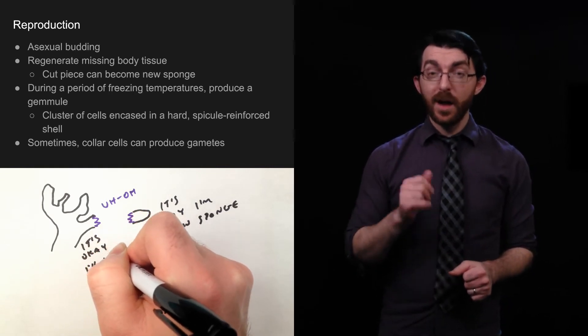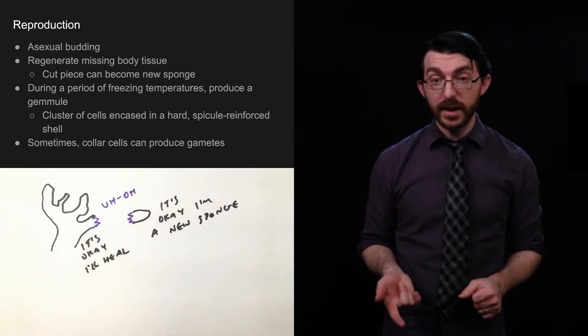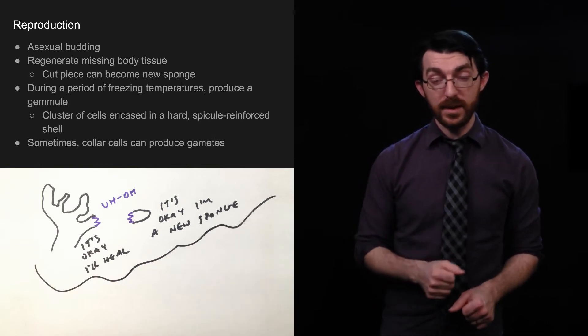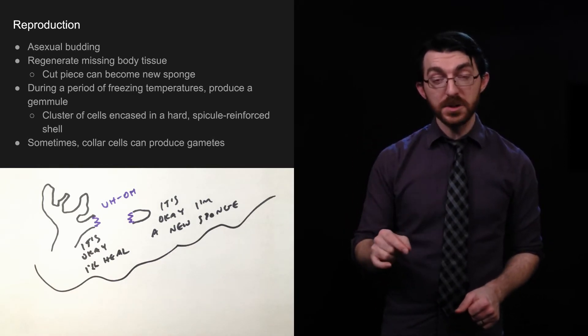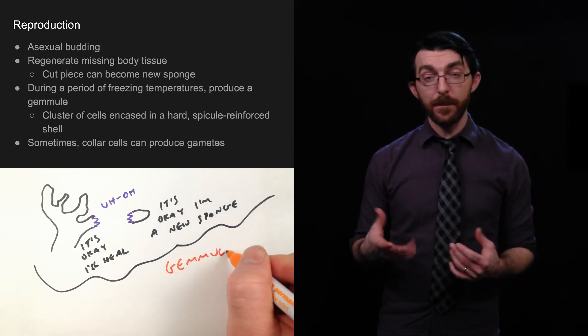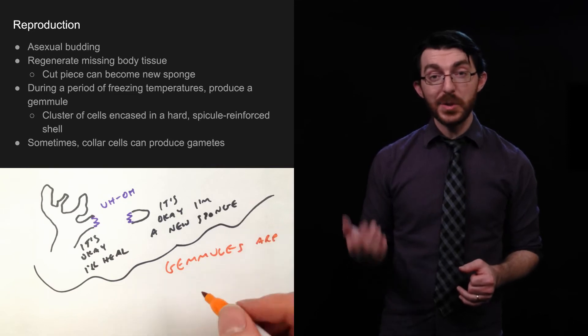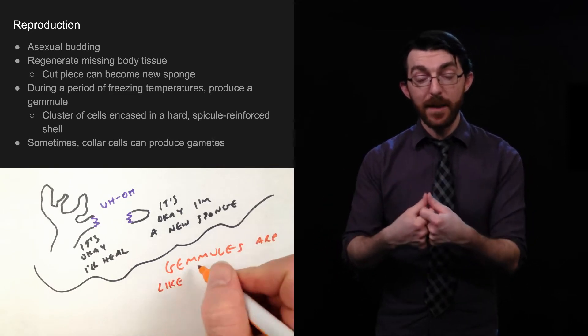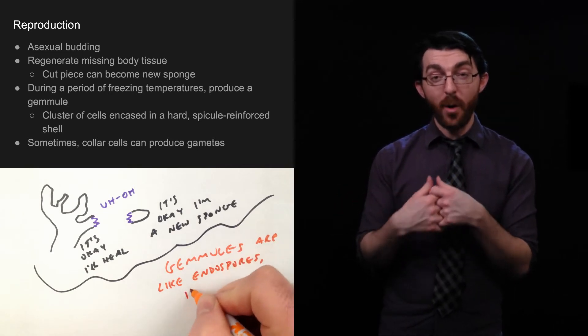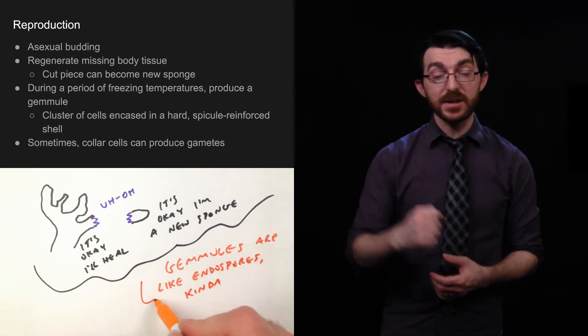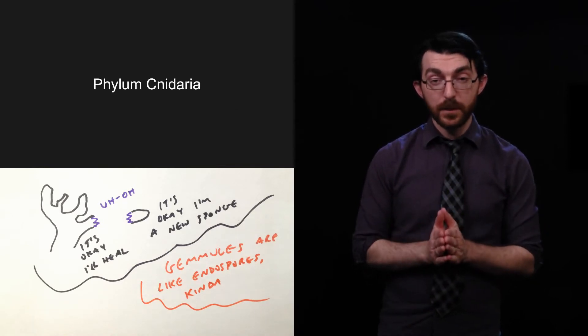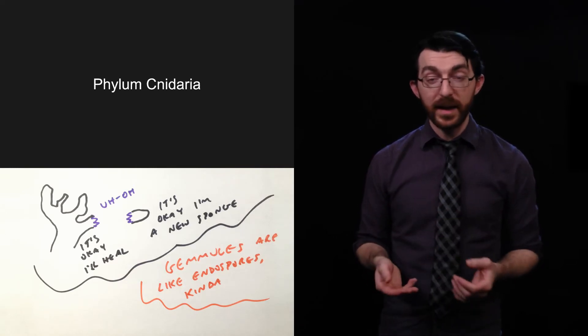Sometimes, collar cells, those would be the choanocytes that line the cavities and canals in the sponge's body, can produce gametes. Gametes are haploid, which means they only have half of their parents' DNA, and the purpose of a gamete, like a sperm or an egg, is to combine with another gamete so that half and half make a whole, half and half of DNA, that is, to make a whole genome. So, that would be a form of sexual reproduction. Okay, so, we're through with sponges. I think we've soaked up everything we can about those.